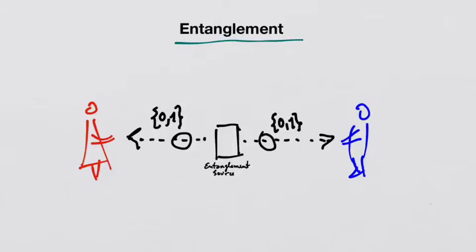Entanglement is both simple and spooky. We have Alice and Bob, and in between there is a device that creates two entangled subatomic particles, sending one to Bob and the other to Alice.